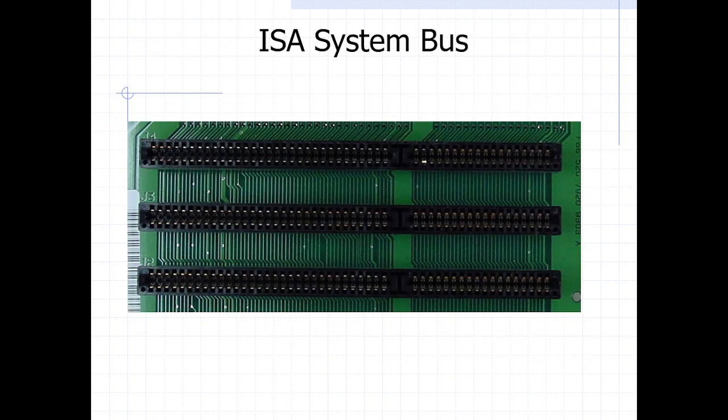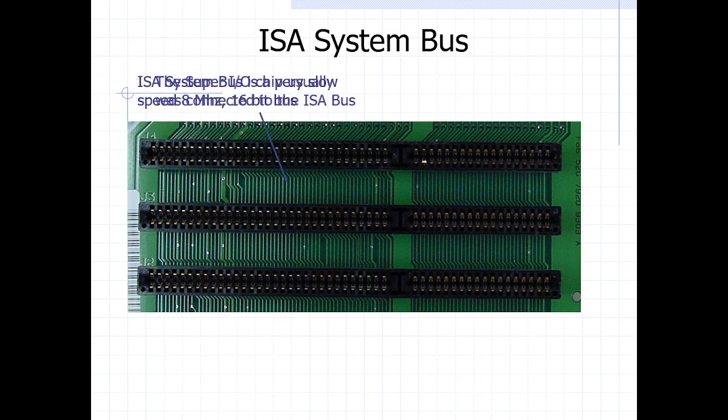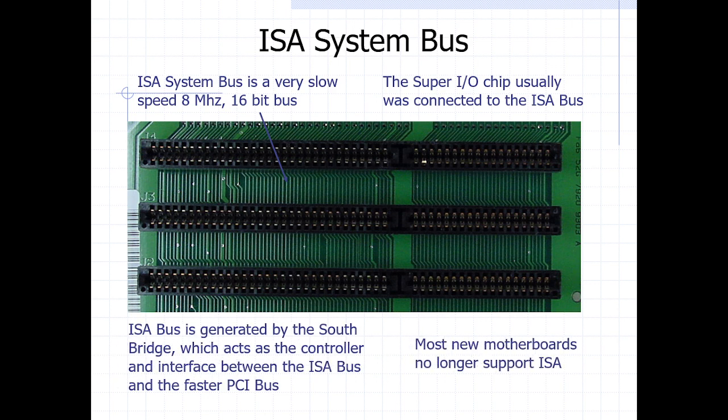We also looked at the ISA system bus — they are black in color. It only supports 8-bit and 16-bit bus, and they are no longer supported in newer motherboards. We can refer to them as obsolete systems, though there are still some computers that are using the ISA bus.